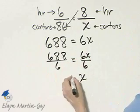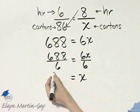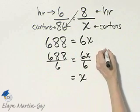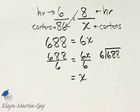The left side, or I should say the right side, I have 1x or simply x. The left side, we need to go off to the side and divide 6 into 688. Let's see what we have.